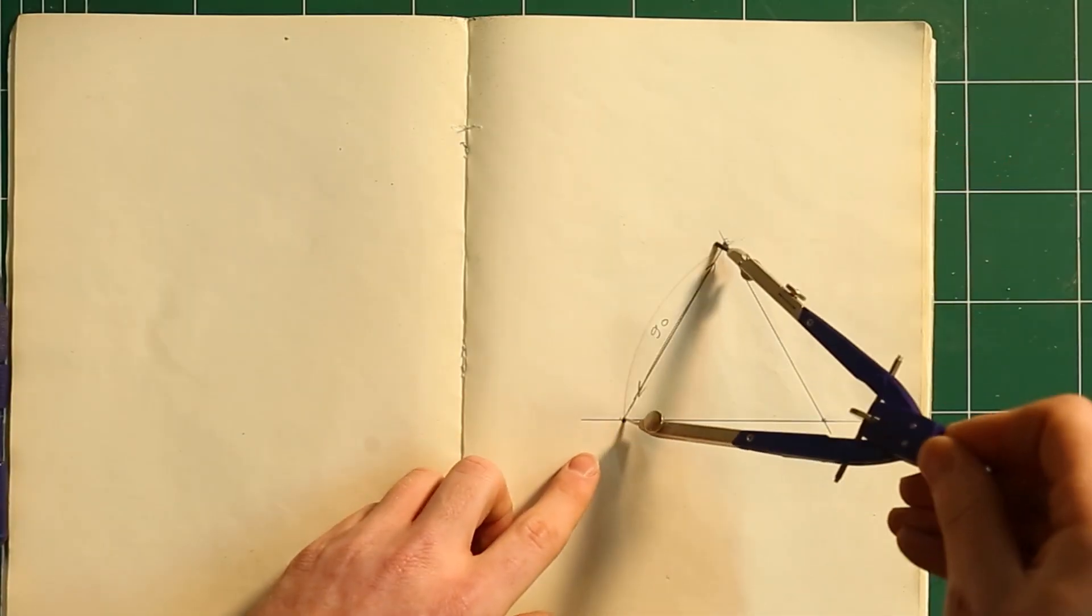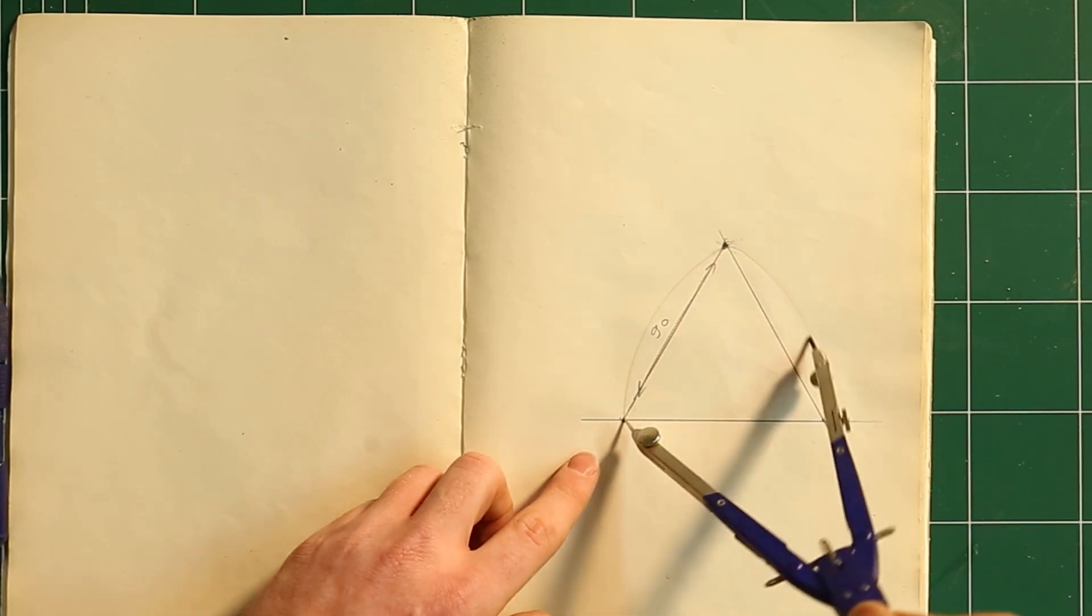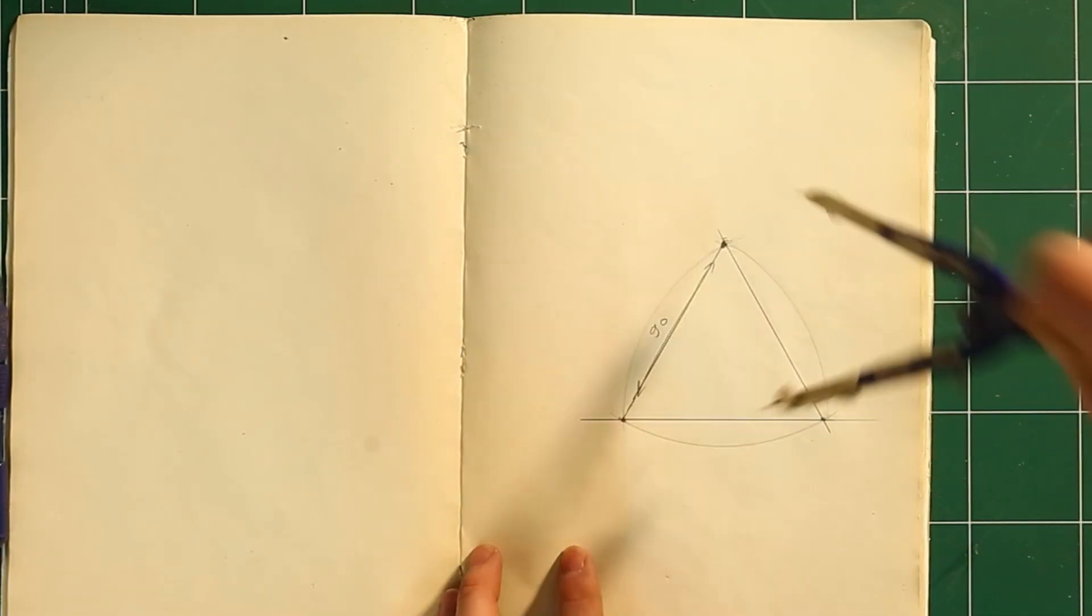We'll start with an equilateral triangle. Now, using a compass, we can replace every side with an arc centered at the opposite vertex.